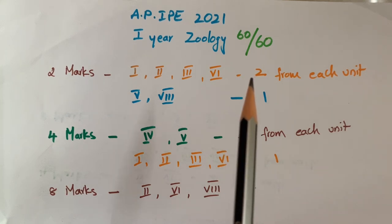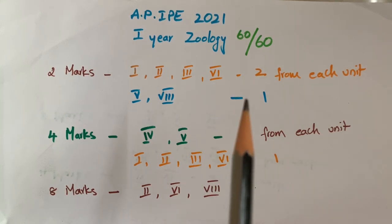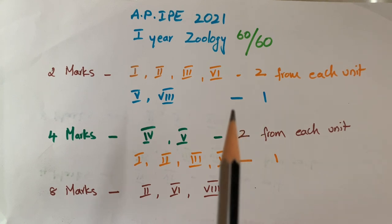This is very important. If you answer all the 2 marks questions perfectly, then there is a chance of getting 60 out of 60.